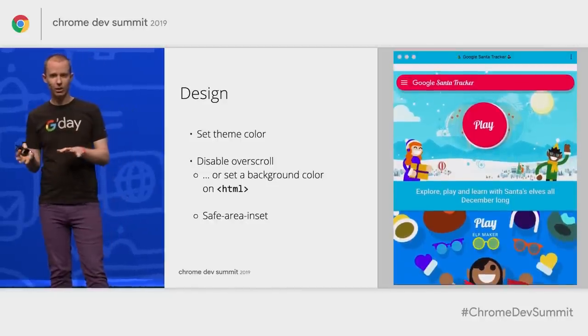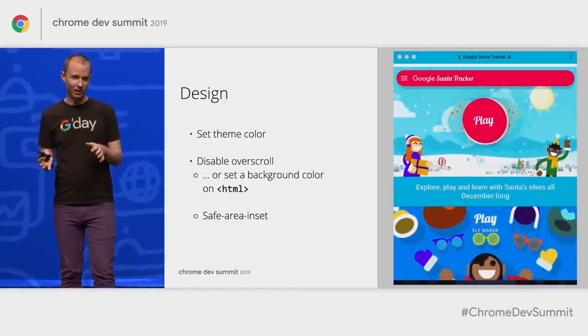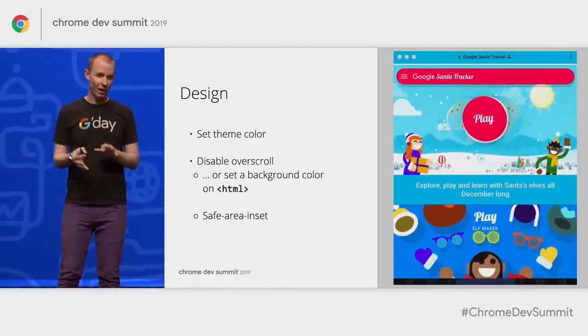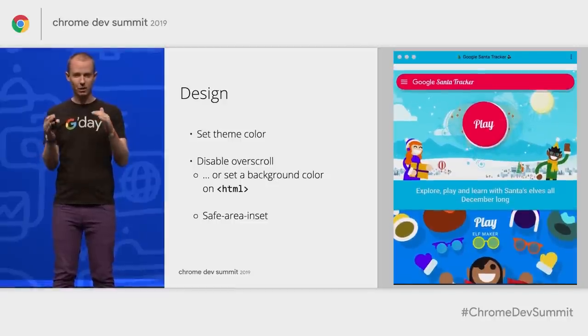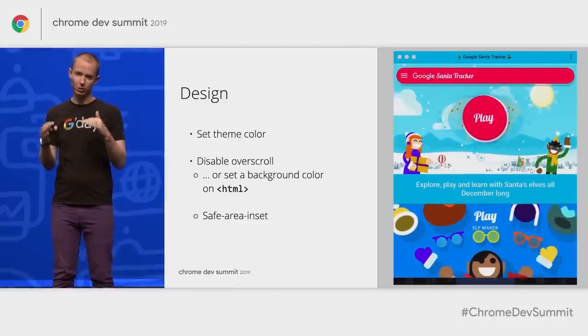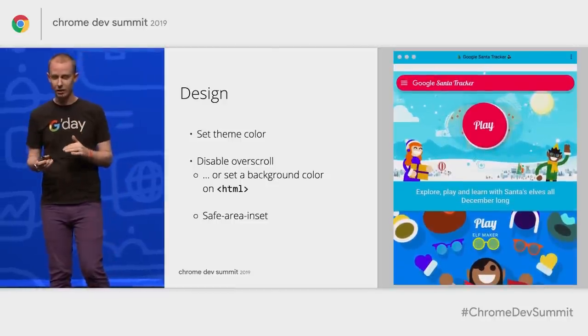Also briefly worth mentioning: safe area inset lets you avoid the notch on phones and put some color or interesting content behind that area.